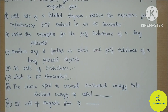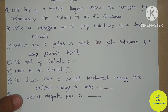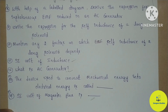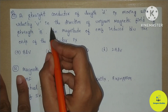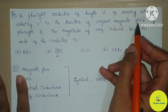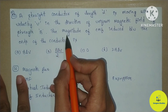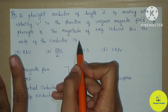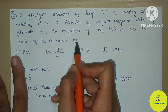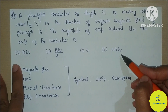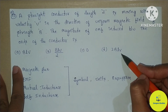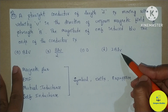The next question is: a straight conductor of length L is moving with velocity v in the direction of a uniform magnetic field of strength B. The magnitude of EMF induced between the ends of the conductor is — this appears as an MCQ in the model question paper. Expressions and options are shown on screen; select the correct answer.